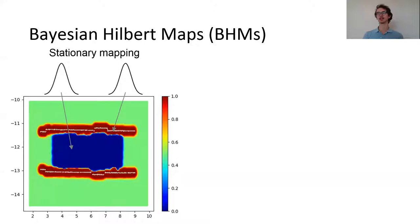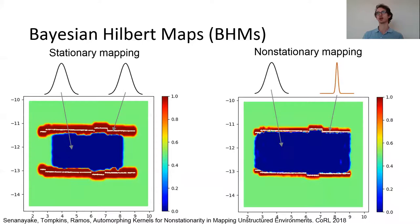We can have stationary kernels which assume a consistent spatial smoothness, or non-stationary kernels enabling us to capture sharper boundaries and smooth regions of the space equally well. Non-stationary mapping, while extremely expressive, has some limitations for large-scale implementation.